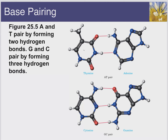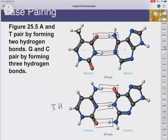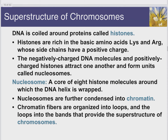Thymine and adenine pair up, and G and C pair up, because their structures allow for specific hydrogen bonding. Between thymine and adenine we get two hydrogen bonds. With C and G we get three hydrogen bonds, so G-C bonds are actually stronger than A-T bonds. It's harder to pull apart DNA strands that have more G-C content.